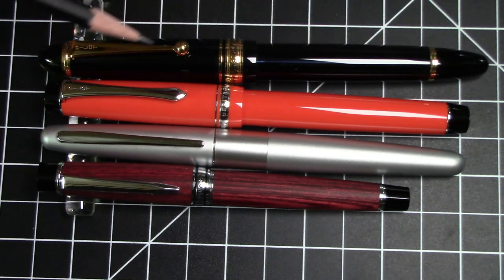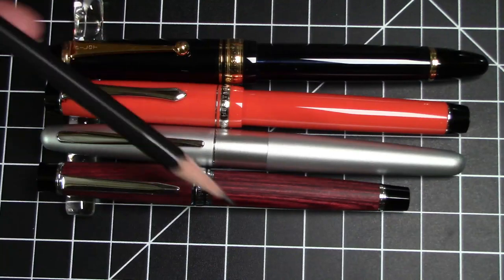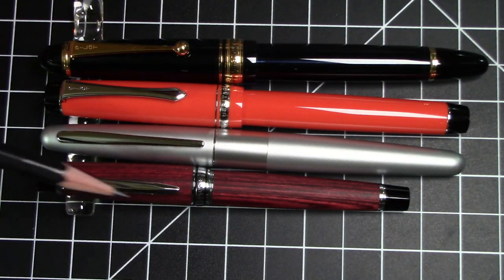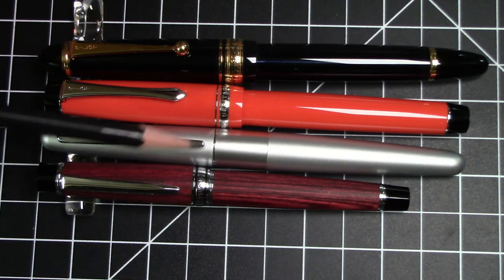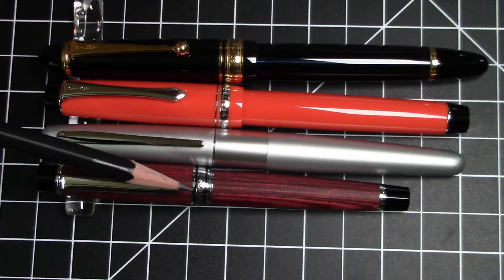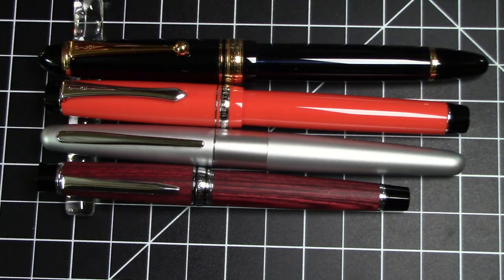And of course, the Pilot Custom 823, which is a very big Pilot pen, is very much bigger than the Legno. So in terms of girth, it's a little narrow. It's definitely skinnier than either of these guys. It's even a little bit skinnier than the Metropolitan. So basically a small pen, not a big pen at all.